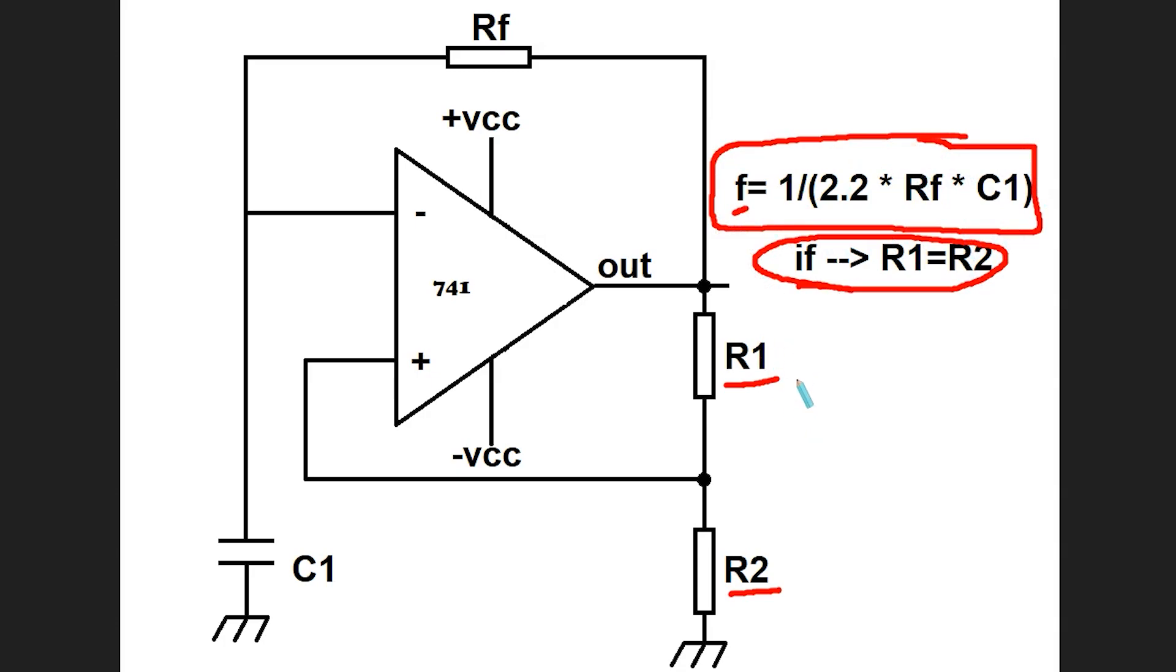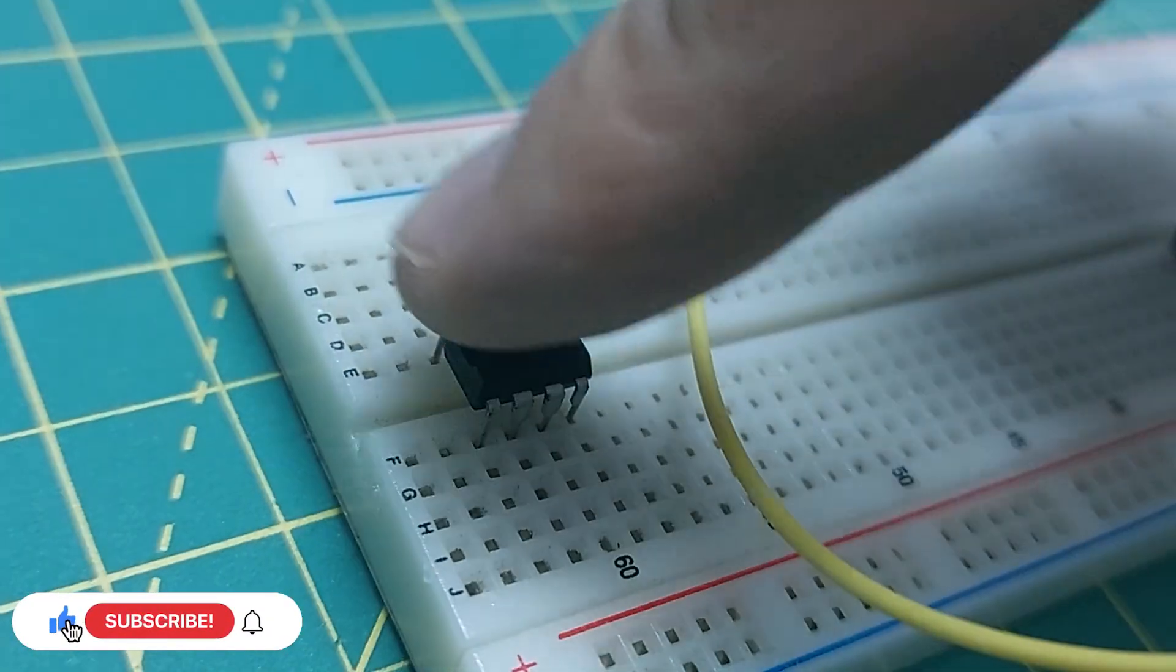Now, if the resistor values are different, the output signal becomes asymmetric. Plus, the frequency will be determined using a different formula, but to keep the video short, I won't go into that right now. Alright, let me set up the oscillator circuit.